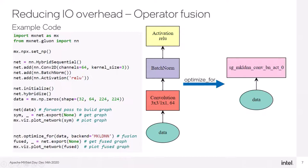To enable graph optimization for CPU, we only need to call a single function, optimize_for, with input data and specified backend as mkldnn. We plan also to add support for onednn name, since it's the present name of our optimization library.